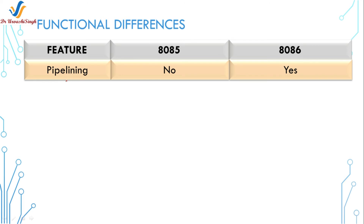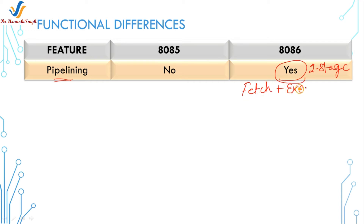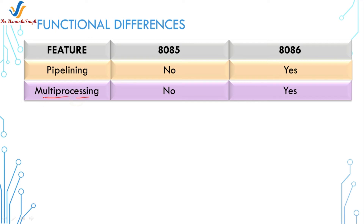The first feature in functional differences is pipelining. This is the concept used to increase the throughput of instructions and it also improves the performance of the CPU. In the 8086 microprocessor, 2-stage pipelining is used: the first stage is fetch and the second is execute. While the microprocessor is executing the first instruction, it is already fetching the next instruction.